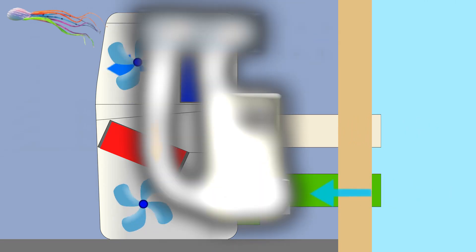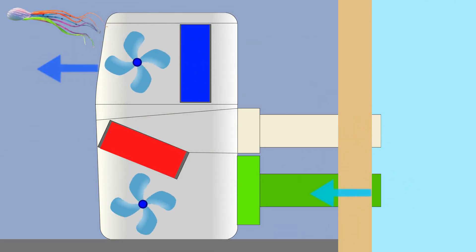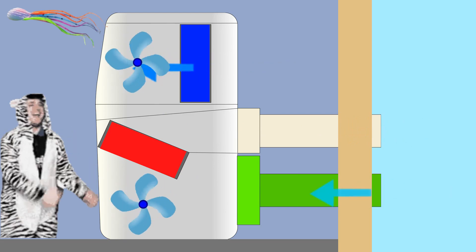With the FITZIO, the air conditioner is cooling itself with the outside air. Therefore, the cold air in the room stays inside.